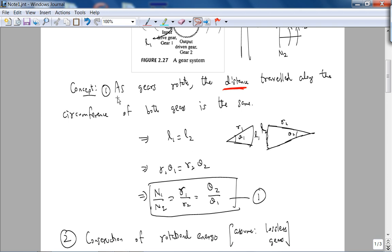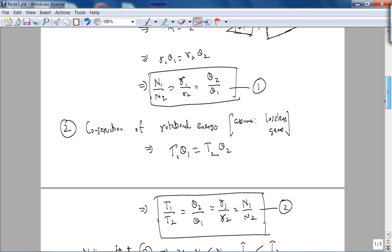The second concept is: since we assumed lossless gears, conservation of rotational energy implies that the energy here—torque times angular displacement—is equivalent. Remember, energy in translational motion is force times distance. The rotational equivalent of force is torque, and the rotational equivalent of linear displacement is angular displacement. So τ1·θ1 = τ2·θ2, or τ1/τ2 = θ2/θ1. You can combine this with equation 1 to give you this relationship. These are the two most important relationships for systems with gears.